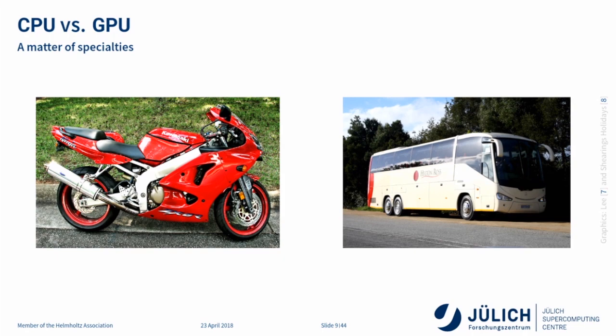CPUs and GPUs are good at different things. A CPU is like a motorcycle — it can do a few things but does them fast. If you care about latency — how quickly you get from point A to B — a CPU is your best option. But if you want to transport a lot of people, getting many motorcycles creates congestion, so a bus is better. That's the bandwidth-versus-latency analogy: high bandwidth, poor latency, so they're not meant for the same tasks.